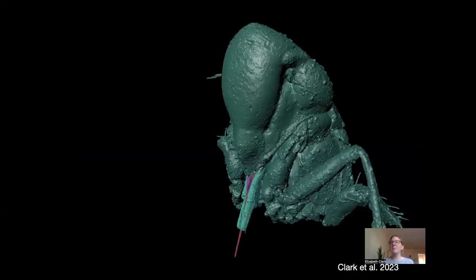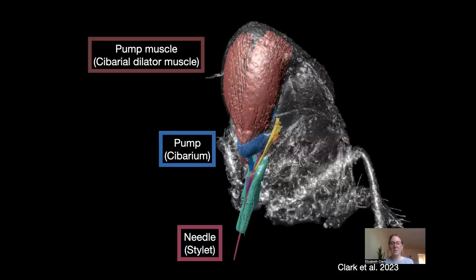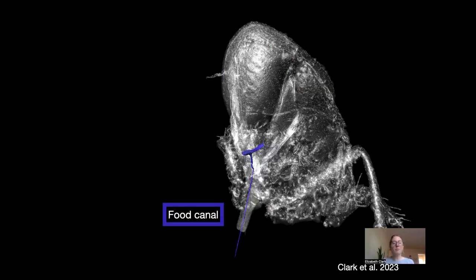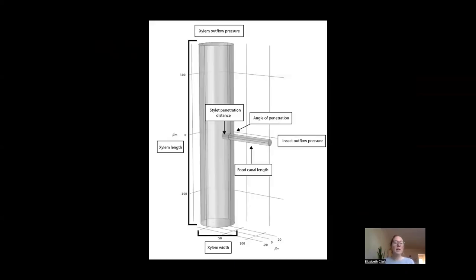Using 3D imaging, we're able to get a really nice high-resolution image of our sharpshooters. We can see the anatomy of the different parts inside the insects that are important for feeding, like the feeding complex, the cybarium — the pump that opens and closes to create suction for ingestion — and the muscles that power the pump as well. We can also see the space inside the insect where fluid flows through the food canal, which is highlighted here in blue.